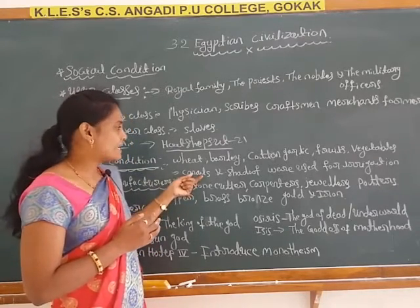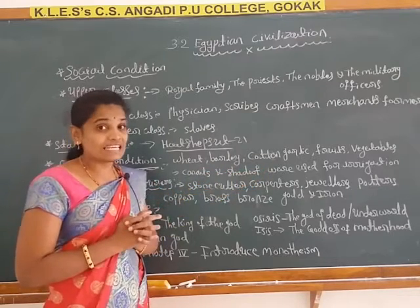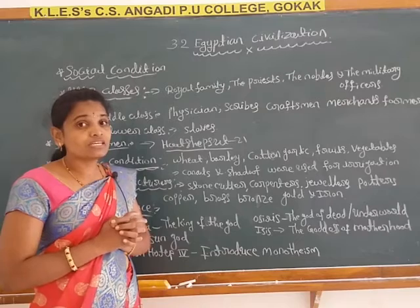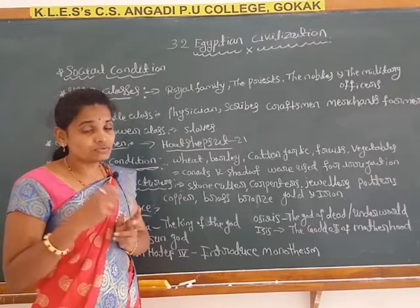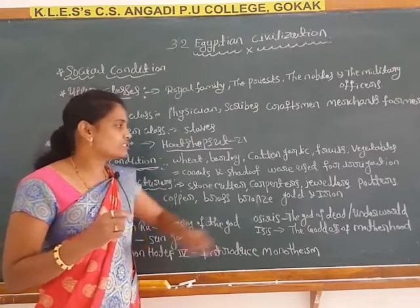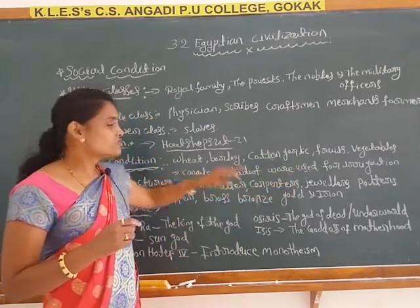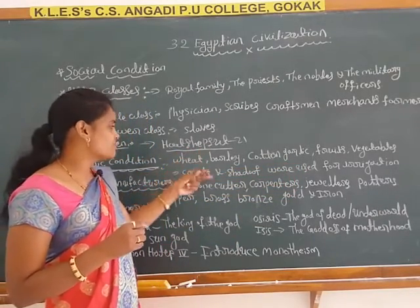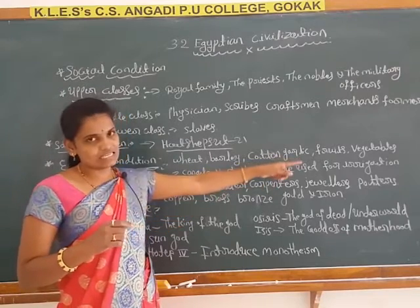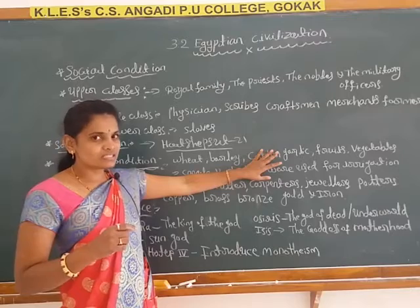They used canals and the shadoof for irrigation. Irrigation means supplying water to the land. Egyptian civilization used canals and the shadoof for irrigation.